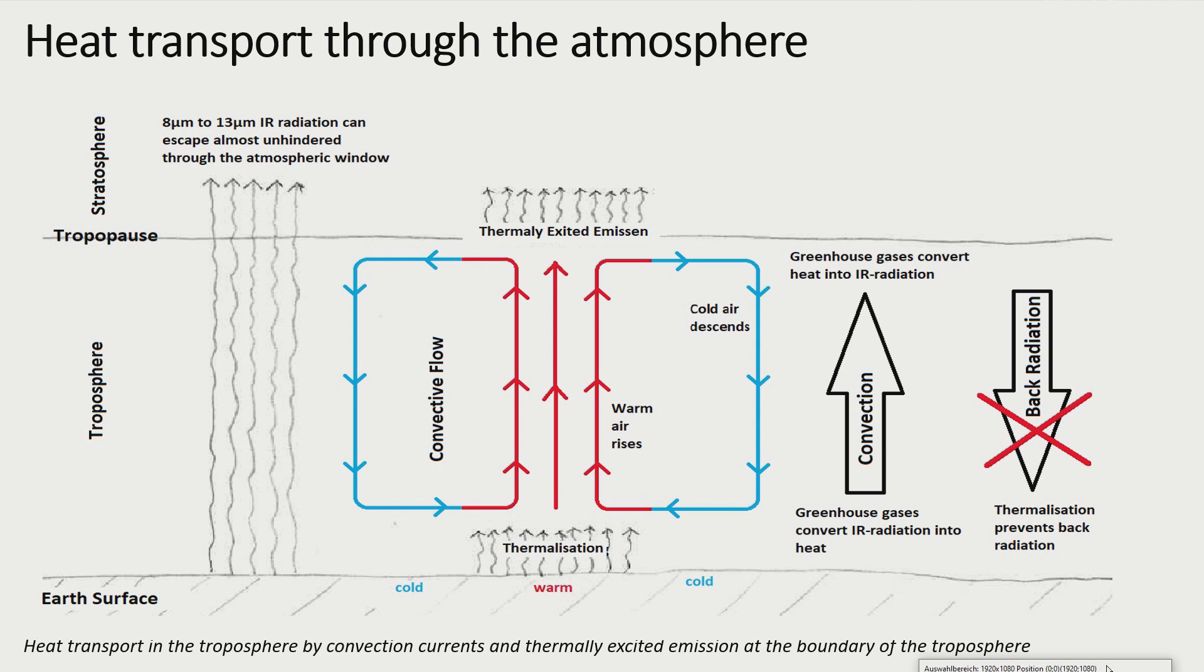In the lower atmosphere greenhouse gases convert infrared radiation into heat that joins the thermal convection. In the upper atmosphere, they convert the heat in infrared radiation and thus contribute to a cooling of the upper atmosphere.